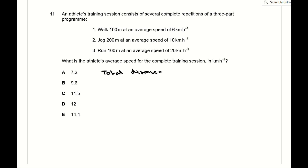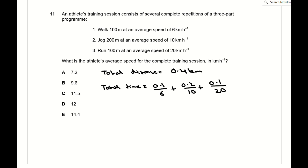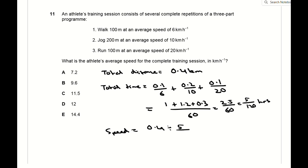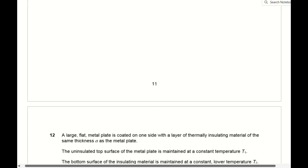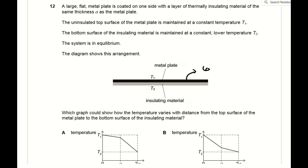For question 11, average speed equals total distance over total time. The total distance is 100 + 200 + 100 = 400 m = 0.4 km. Dividing each segment by its speed and converting to kilometres gives a total time of 5/120 hours. Dividing 0.4 km by 5/120 hours gives an average speed of 9.6 km/h, which is B.